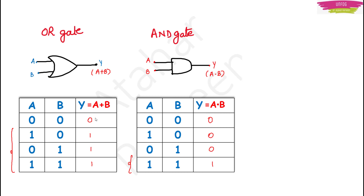Now let's talk about AND gate. This is the symbol of the AND gate. In the same manner, instead of adding the inputs we multiply them. If input is 0 and 0, output is 0. If input is 1 and 0, output is 0. If both inputs are 1 — that means both inputs are high — then output will be 1. This is your AND gate.